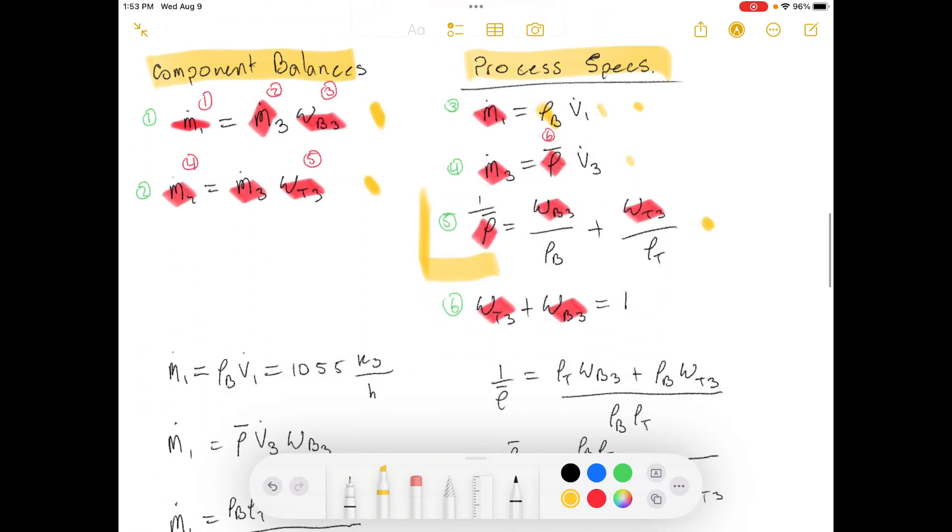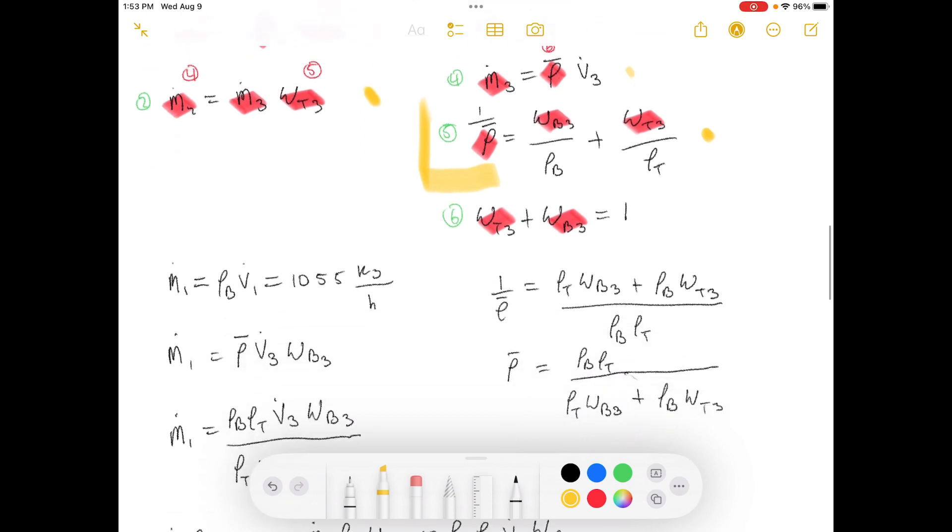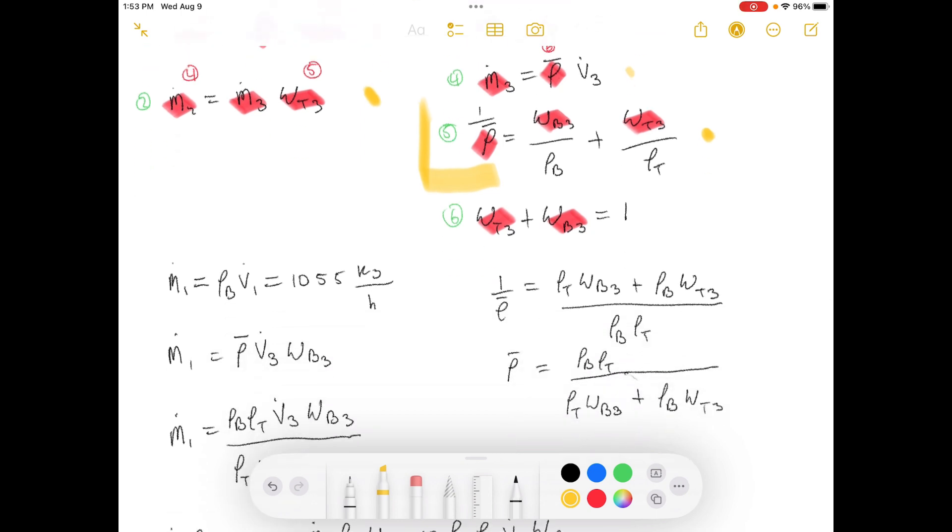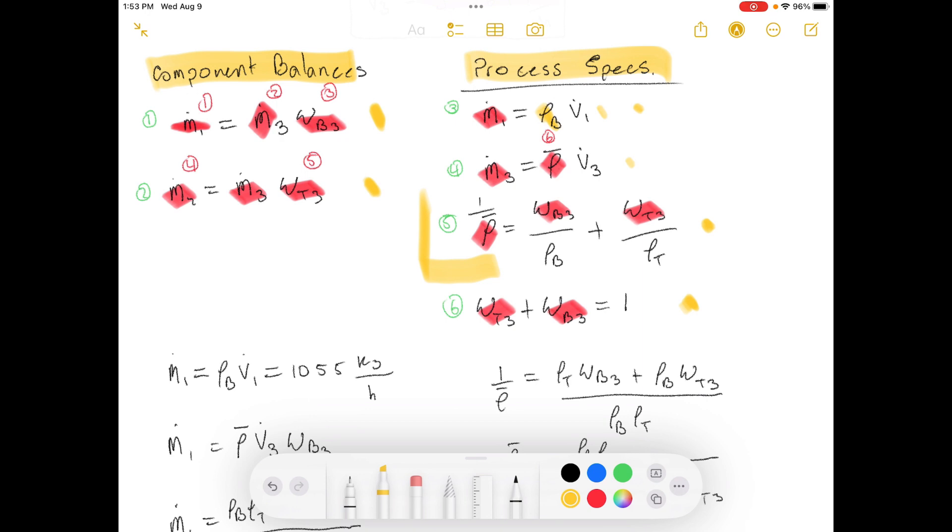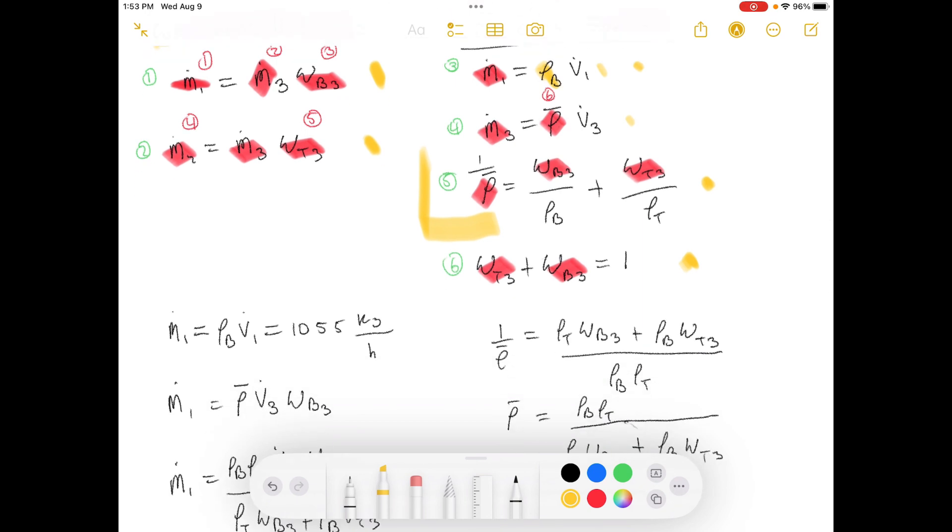So, that's what this is. And then, the final process spec here is that when you add up the weight fractions of the benzene, or the toluene and the benzene, it equals one. If you sum up all the weight fractions, it equals one. And this is for stream three that we're particularly interested in.